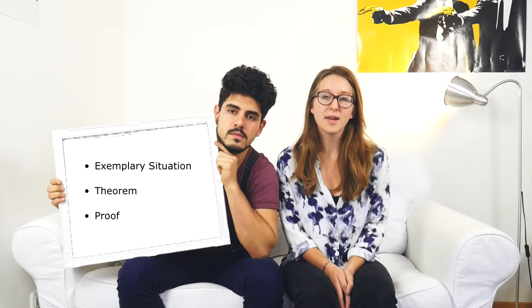In short, the theorem says that there can be trade situations when no mechanism exists that can ensure efficient trade between two individuals. Our video is structured as follows: first we're going to introduce an exemplary situation which we'll work with throughout the whole video, then we're going to explain the theorem and its conditions, and then we're going to prove it.